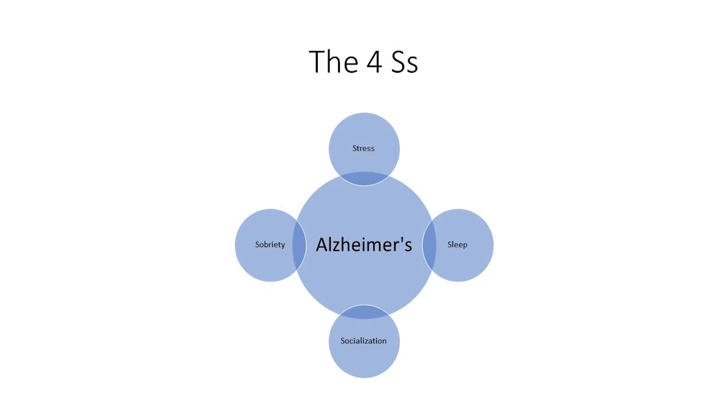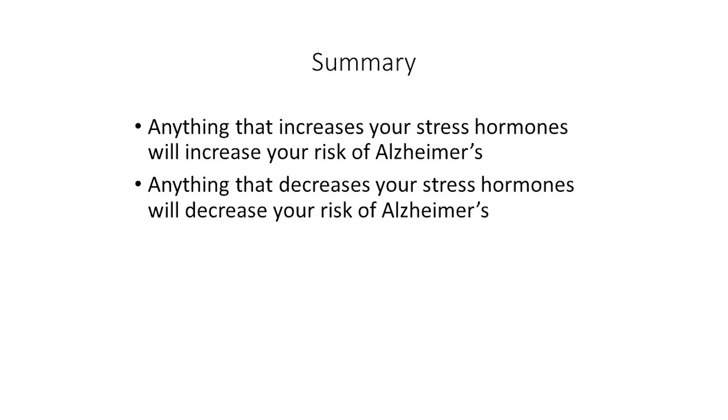Here's that quiz question again, this time with the answer in bold. Can you believe that all four S's really boil down to stress and those two stress hormones? That's the common thread, and that's why the answer came down to stress hormones. The summary is: anything that increases your stress hormones will increase your risk of Alzheimer's, and anything that decreases your stress hormones will decrease your risk. So go relax, get a lot of good high-quality sleep, socialize with people you enjoy, and stay away from alcohol — those four things will enable you to remember to come back in a week.